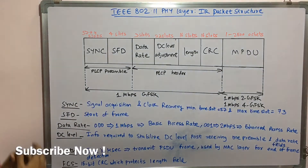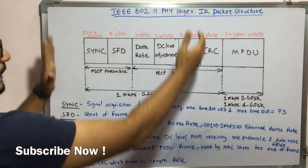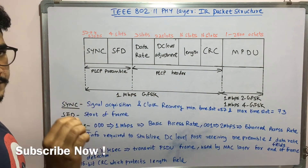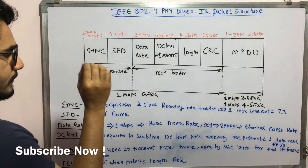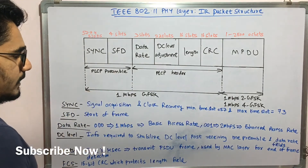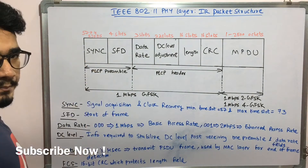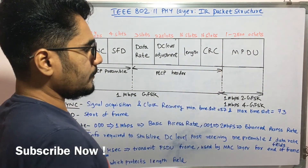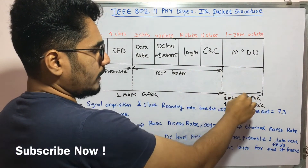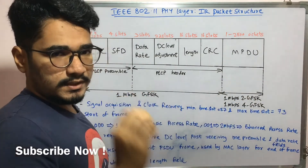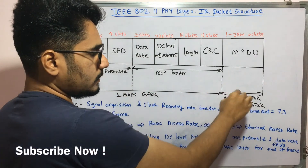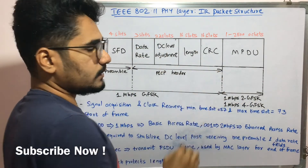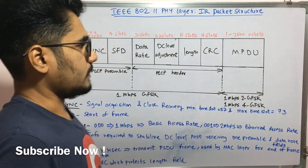This part of the slots represents Gaussian Frequency Shift Keying — GFSK — at 1 Mbps rate. The MPDU has two variants: 2-GFSK and 4-GFSK, both operating at 1 Mbps rate.